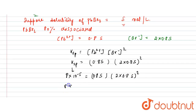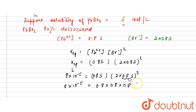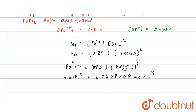Expanding: 8×10⁻⁵ = 0.8 × (0.8)² × 4 × s³, which gives us 8×10⁻⁵ = 0.8×0.8×0.8×4×s³.